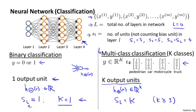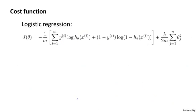Now let's define the cost function for our neural network. The cost function we use for the neural network is going to be a generalization of the one that we use for logistic regression. For logistic regression, we used to minimize the cost function J(theta) that was minus 1 over m of this cost function and then plus this extra regularization term here where this was a sum from j equals 1 through n because we did not regularize the bias term theta_0.